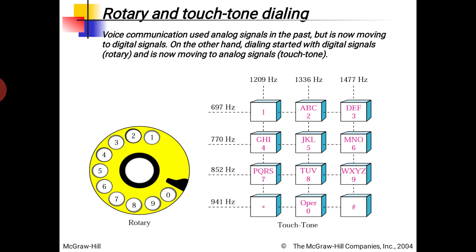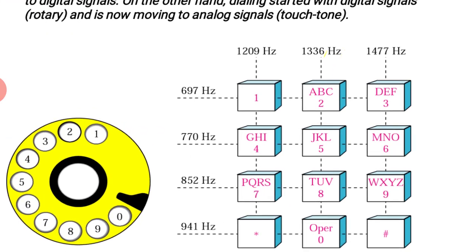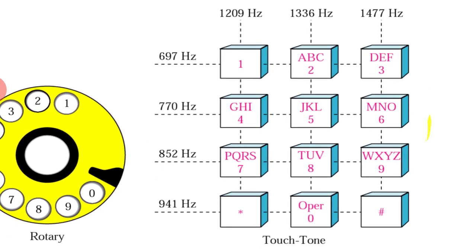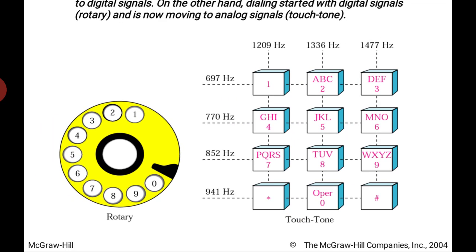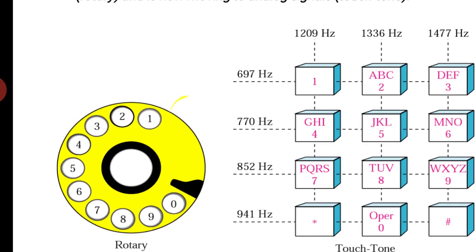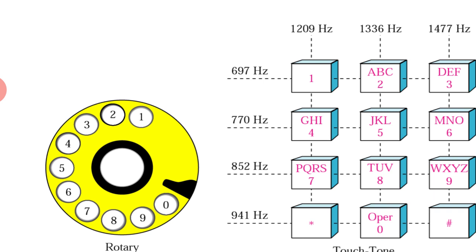The next concept is rotatory versus touch-tone dialing. Today we use touch-tone dialing — the keys on your mobile keypad or landline set. Earlier, rotatory dialing was used. With rotatory dialing, digital data was sent to the exchange: dialing a number like 0-1-1-5-6-7 sent pulses corresponding to each digit as a digital signal to the nearest exchange node.